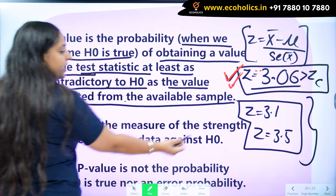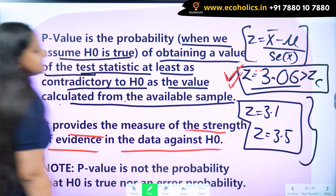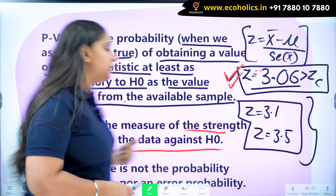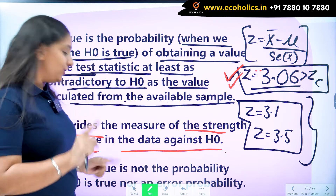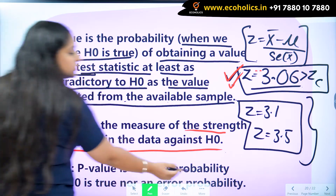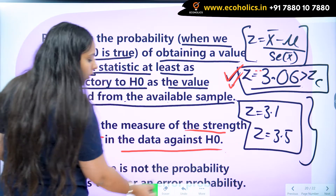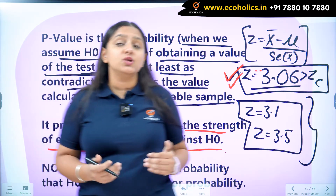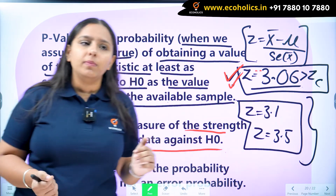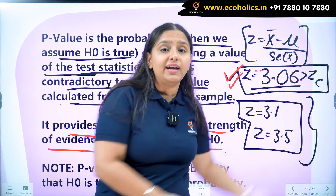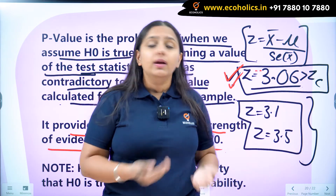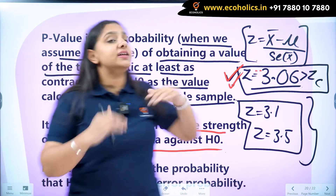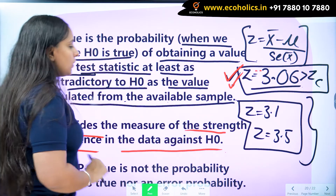P-value provides the measure of strength of evidence in the data against H0. It tells you how much evidence you have against H0 in your sample. Note a very important thing: p-value is not the probability that H0 is true, nor an error probability. Many times people say that p-value is the probability that H0 is not true or is true, or they relate it to alpha and beta — the type 1 and type 2 errors. But be aware, p-value is neither of them. It is totally different from those concepts.